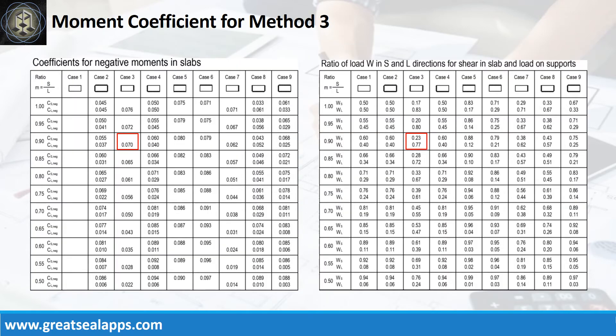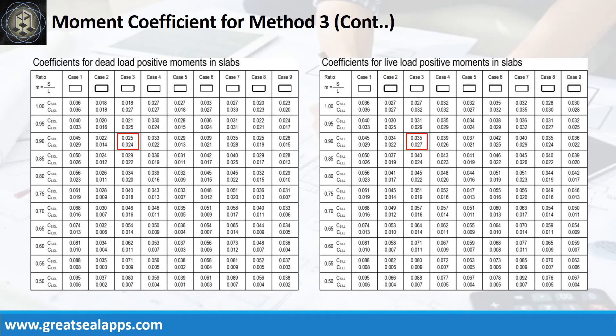Use Case 3 at m equal to 0.9. Refer coefficients for negative moments and shear computations. Use Case 3 at m equal to 0.9. Refer coefficients for dead load and live load positive moments.